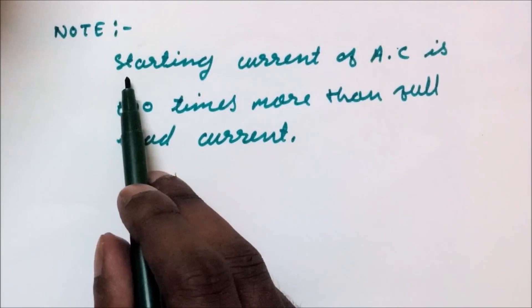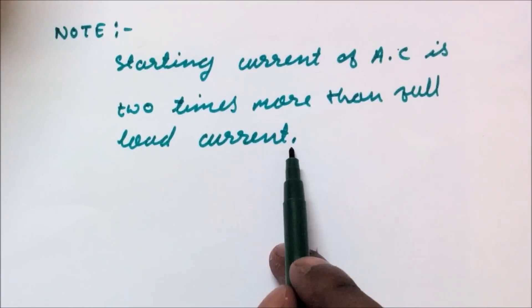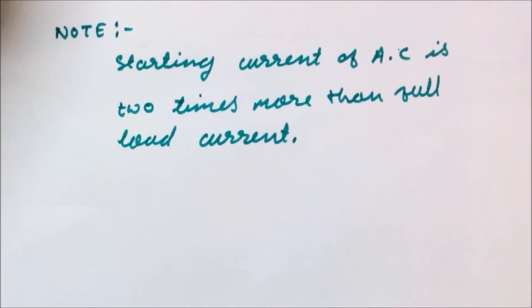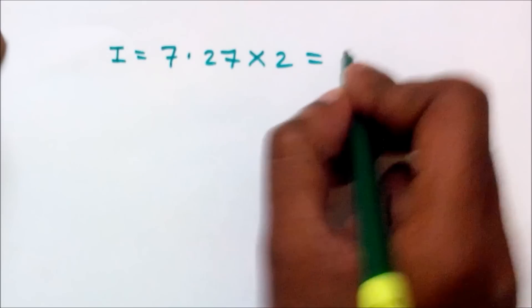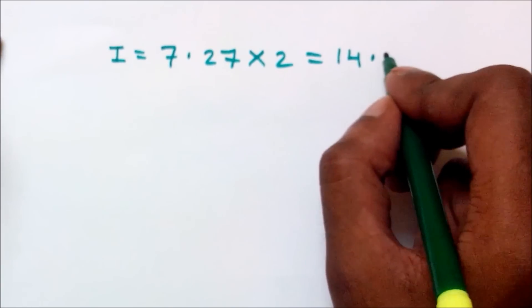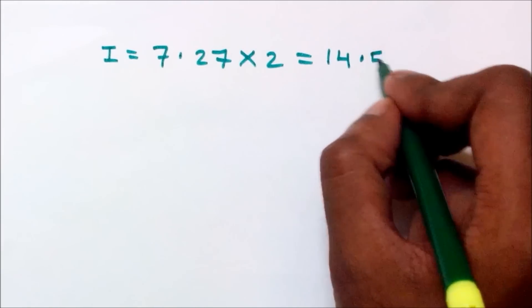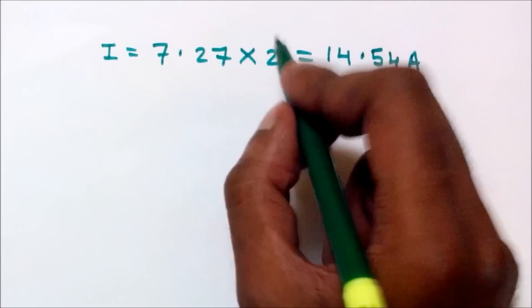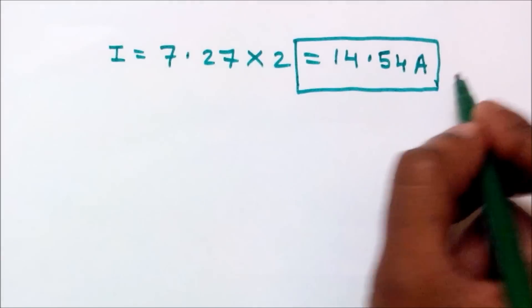Note one thing: the starting current of AC is 2 times more than full load current. So, the calculation is 7.27 multiplied by 2 equals 14.54 ampere. This is the starting current of AC.